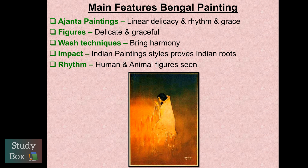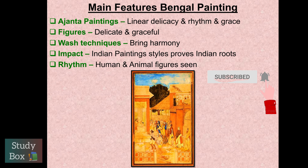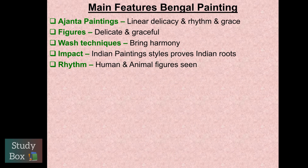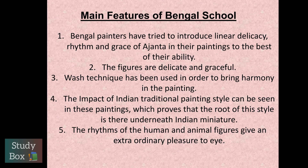Wash techniques bring harmony, which is the main important thing in Bengal School. If you write about any painting - artist, school, period, medium - we will write techniques and collection. For Bengal School, wash and tempera is very famous as the medium. Indian painting style proves Indian roots - we have kept our roots and have not simply copied. We also studied human and animal figures that we can see in the paintings. With this, the chapter is completed.